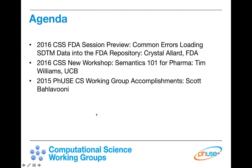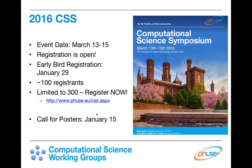Before turning it over to Crystal and Tim, I want to highlight important dates for the 2016 Computational Science Symposium. The event will occur in Silver Spring, Maryland — hopefully beautiful, as opposed to the three inches of snow we had a couple of years ago. It will take place March 13th through the 15th of 2016. Registration is now open, and if you register before January 29th there is a discounted rate.